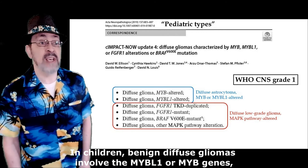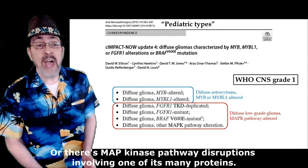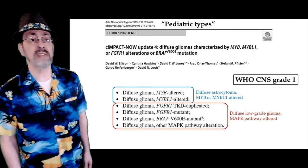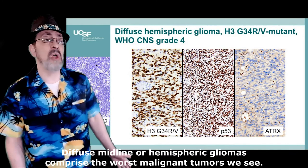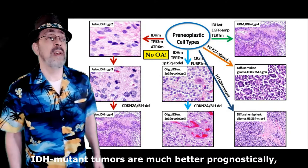In children, benign diffuse gliomas involve the MYB and MYBL1 genes, or there are MAP kinase pathway disruptions involving one of its many proteins. But pediatric high-grade gliomas often mutate genes that code histone 3. Diffuse midline or hemispheric gliomas comprise the worst malignant tumors we see.